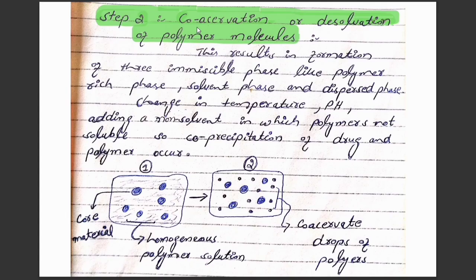The second step is called the coacervation step or the desolvation of polymer molecules. During the second step we get three immiscible phases. The first phase is called the solvent phase — this white area shows us the solvent phase. The second phase is called the dispersed phase — the large molecules are the core material and these are the dispersed material. The third phase is called the polymer rich phase — this black color shows us the polymers.